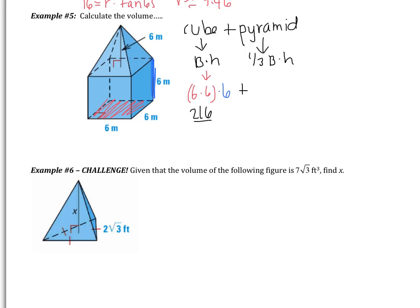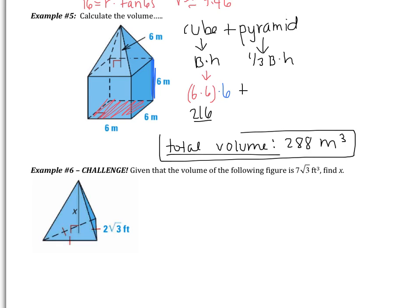Pause the video — you find the pyramid, then find the total volume. You should have gotten the total volume to be 288 meters cubed. If you didn't, you made a mistake, so please go back and find it. I will answer any questions in class tomorrow.